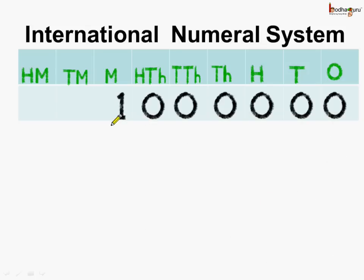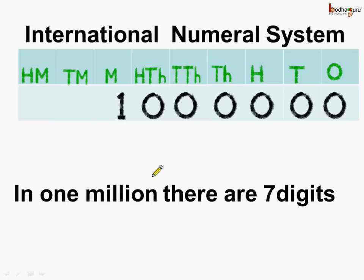Now what is this number equal to? We start counting: ones, tens, hundreds, thousands, ten thousands, hundred thousands, millions. So this number is equal to one million. And if we see, in one million there are seven digits. So there are seven digits, and it has one followed by six zeros. Now you know what one million is.